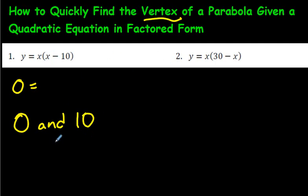Now, in order to find the vertex, what you want to do is find the halfway point between zero and ten. What's the halfway point? Well, the rule is you just add them up. Zero plus ten, and then divide by two. Cut that in half, and you get five. So the x value of the vertex would be five.